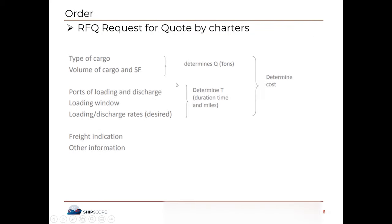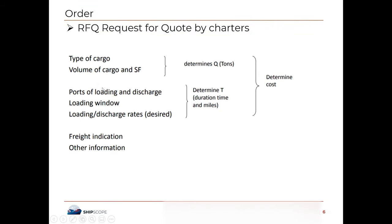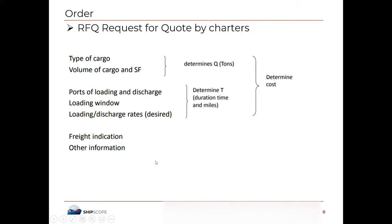What is the order by charterers? You need to know what kind of cargo it is — the type, volume, and stowage factor, which gives us the quantity. Then we need to know what are the load port and discharging port, what is the laydays, laycancelling, and loading window. Loading and discharging rates need to be known. This whole thing comes up with the cost, along with the freight indication and other information given by the charterers.